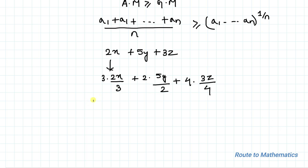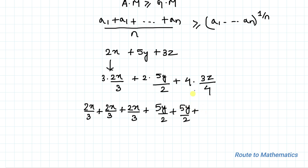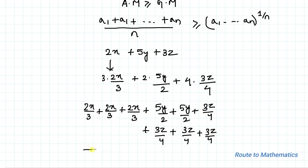So we have 3 terms of x: (2x/3) + (2x/3) + (2x/3), plus 2 terms of (5y/2): (5y/2) + (5y/2), plus 4 terms of (3z/4): (3z/4) + (3z/4) + (3z/4) + (3z/4). That gives us 1, 2, 3, 4, 5, 6, 7, 8, 9 terms total, so we divide by 9, which must be greater than or equal to the product of all these terms.